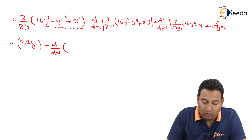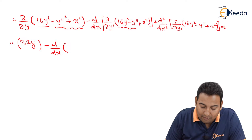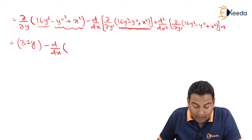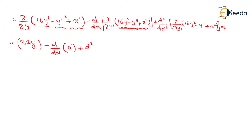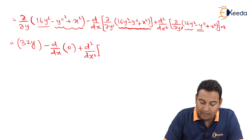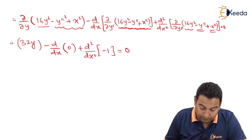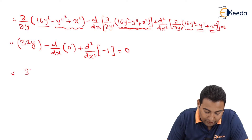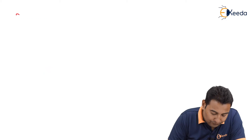Minus d/dx of ∂/∂y' of f: since there is no y' term in f, this entire derivative is 0. Then plus d²/dx² of ∂/∂y'' of f: with respect to y'', the term minus y''² gives minus 2y'', and all other terms are 0. So we have 32y plus d²/dx² of (minus 2y'') equal to 0.